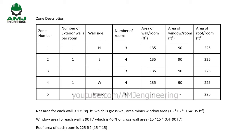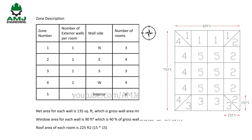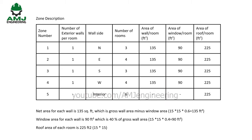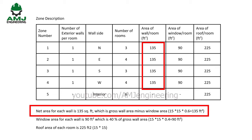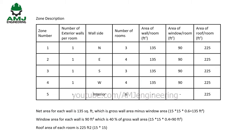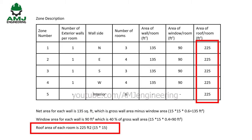Let's tabulate this data. The table includes: zone number, number of exterior walls per room (one in all peripheral rooms, zero in central rooms), wall facing direction, number of rooms per zone, and area of wall, window, and roof per room. Window area is 40% of gross wall area, giving 90 square feet per window. Net wall area is 135 square feet (gross minus window). Roof area per room equals floor area: 225 square feet.